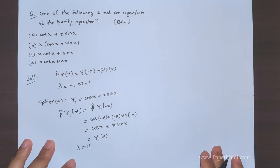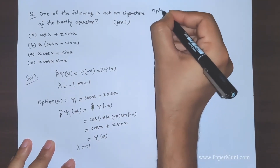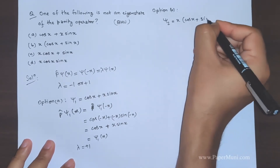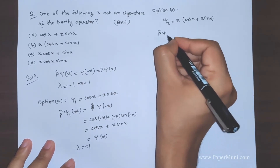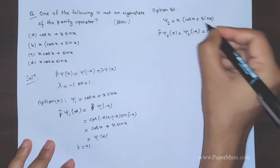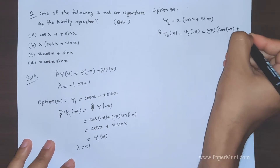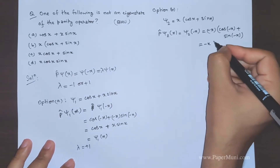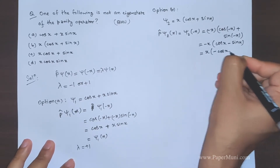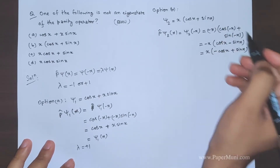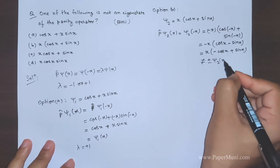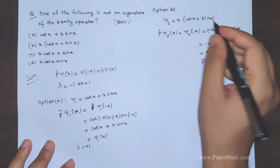The eigenvalue here is +1. For option B, ψ₂ = x·cos(x) + sin(x). Applying the parity operator gives ψ₂(-x) = (-x)·cos(-x) + sin(-x) = -x·cos(x) - sin(x) = -(x·cos(x) + sin(x)). Wait — this gives -ψ₂, but let's verify: -x·cos(x) - sin(x) is not equal to ±1 times (x·cos(x) + sin(x)) in a clean factored form, so this does not satisfy the eigenvalue equation.